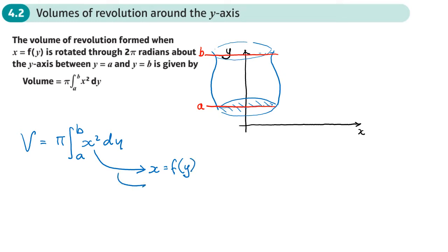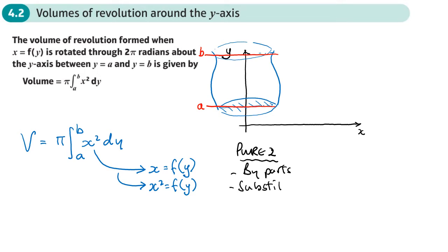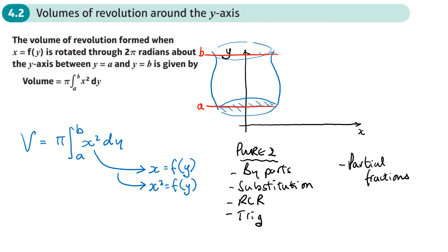Sometimes it might actually be helpful if you've got x-squared in terms of a function of y — that may be easier depending on the question. Methods that we have from P2 to do our integration: we've got integration by parts, we've got substitution, we've got reverse chain rule, maybe some trig identities, and partial fractions. So we're using these methods to work out our integral.